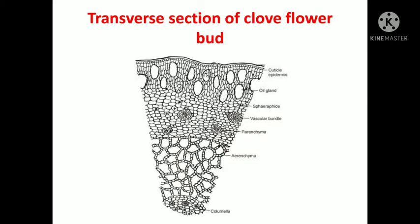After taking a thin transparent section and observing under the microscope, the diagram shows cuticle, epidermis, oil glands, vascular bundles, and parenchyma. In the center it shows columella.